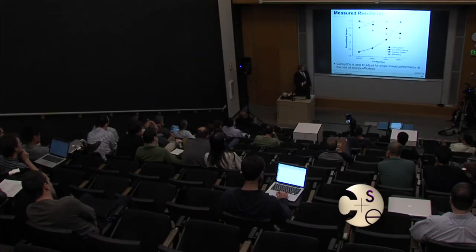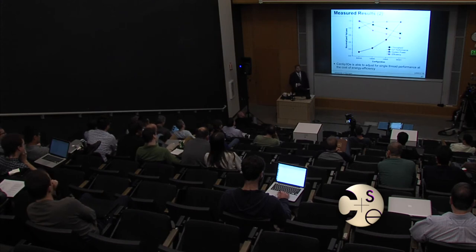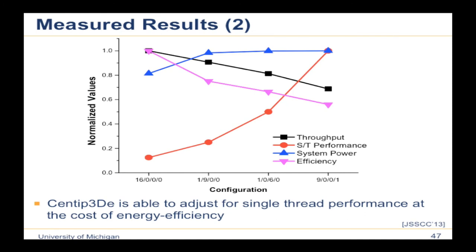Looking at four configurations at approximately iso-power: four-core, three-core, two-core, and one-core near threshold, plus nine cores near threshold with one at high single-thread performance. Near threshold achieves good efficiency and throughput but low single-thread performance. Upping the voltage yields better single-thread performance at the cost of efficiency and throughput. This allows a configurable architecture that adjusts to what the program actually needs at a given time — how much parallelism is available and how much throughput and energy efficiency are required.